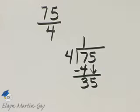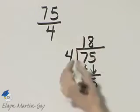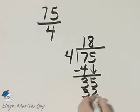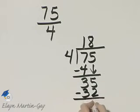And I'll bring down my 5. How many times does 4 divide into 35? That would be 8 times, and 8 times 4 is 32, and I have a remainder of 3.